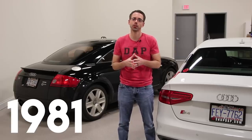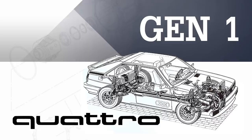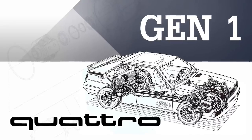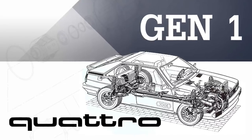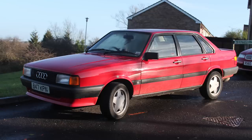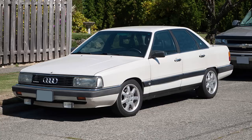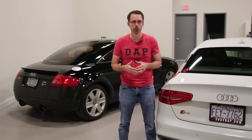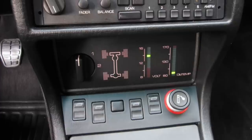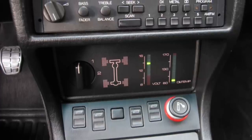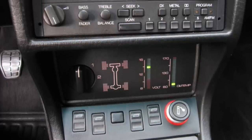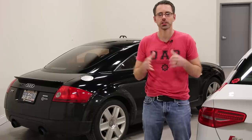The traditional Audi all-wheel drive system started in 1981 with the generation one Quattro. The vehicles this was mounted in were the Audi 80, 100, 4000, and 5000 models. Those vehicles featured an open front differential and an electronically lockable — via a switch in the center console — center and rear differential.